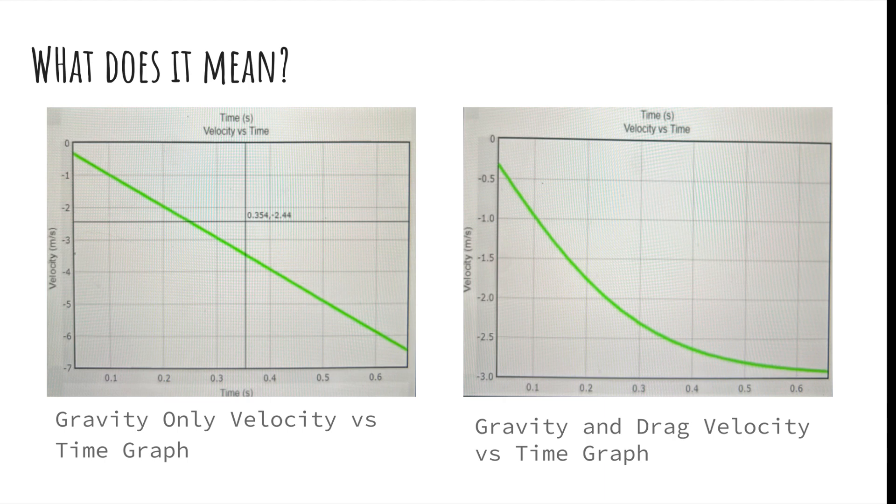For our 'what does it mean' question, we can see that the model that considers gravity and drag will reach a terminal velocity. This is because it looks like towards the end the velocity becomes constant, which indicates zero acceleration and zero net force. Remember that we have zero net force here because the force of gravity and drag are equal to each other.